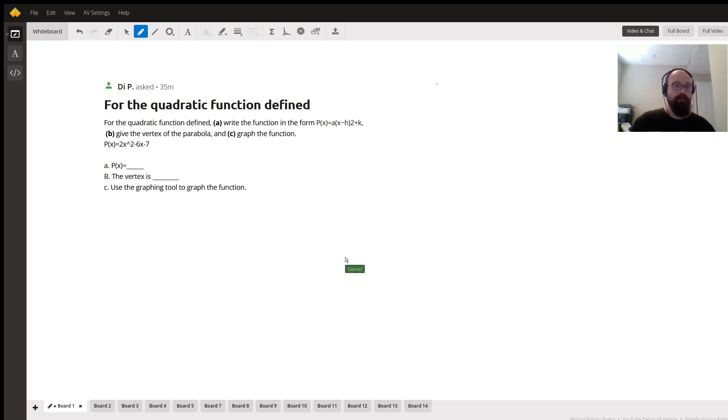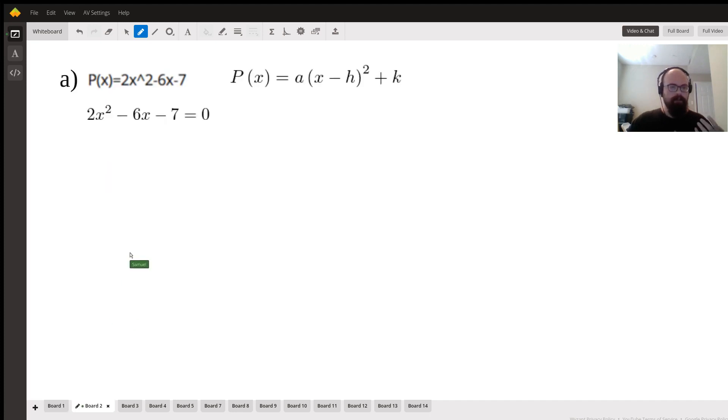And the function that we're working with here is 2x² - 6x - 7. And so for our first portion, part a, this is basically asking us to put it into vertex form. So we're going to be starting off with our equation 2x² - 6x - 7, and we want to put it into that p(x) = a(x - h)² + k format.